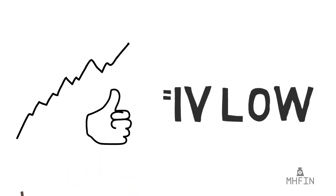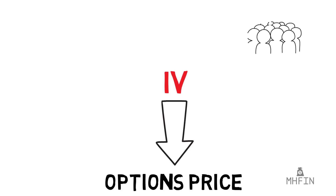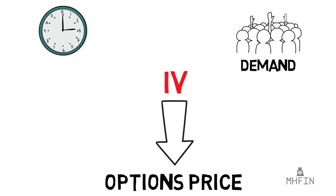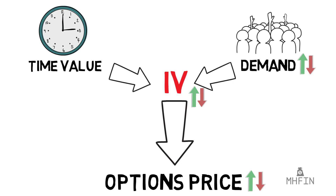What does all this mean for you? What variables are affecting this measure called implied volatility? Well, there are a number of factors that go into it, but the two major ones are demand and time value. When demand for a particular stock or security is high, its IV tends to increase with it. Higher prices because of demand cause risk to rise as well as premiums. The inverse is true when demand is low — implied volatility falls and the options price becomes cheaper.